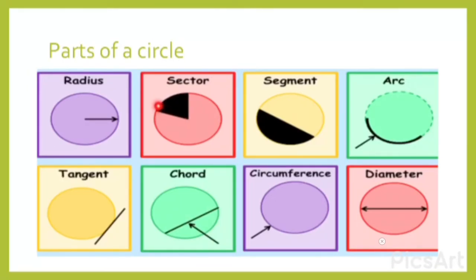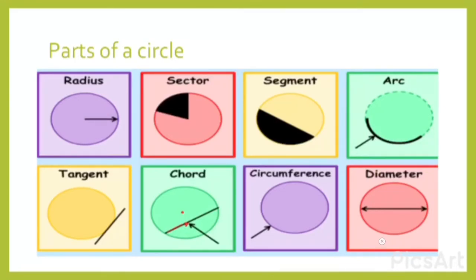A sector looks like a pizza slice. Now, segment — to explain a segment we first need to look at a chord. A chord is any line from one point of the circumference to another point of the circumference, but not passing through the middle. The difference between a chord and a diameter is that the diameter passes through the center point, while a chord is somewhere away from the middle.